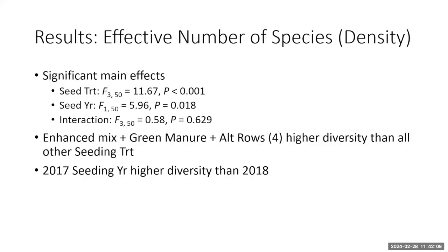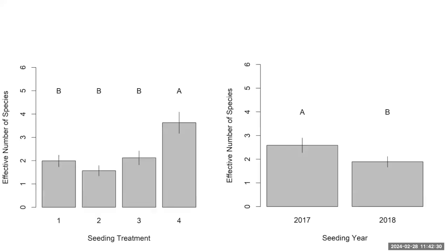Using the density method, we get the same interpretation: significant main effects where treatment four had higher diversity than all other seeding treatments, and the 2017 seeding year had higher plant diversity than 2018. The figures look very similar — treatment four is higher than all others, and 2017 is higher than 2018.